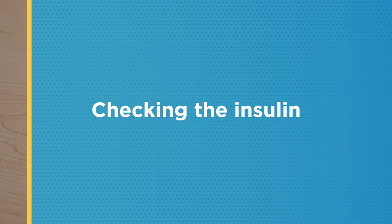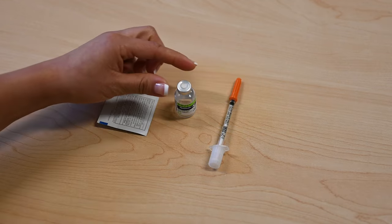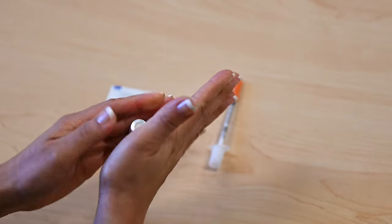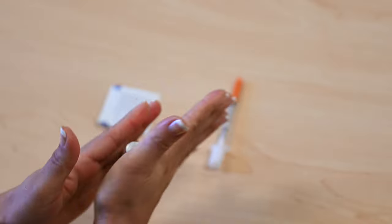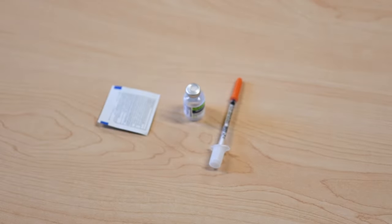Wash your hands. If the insulin bottle is cloudy, roll the bottle from side to side for one minute. Do not shake the bottle. If your insulin is clear, you do not need to roll the bottle.